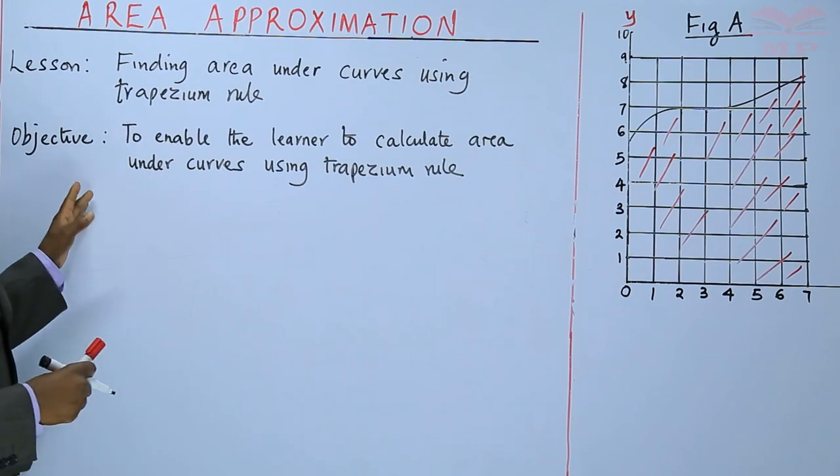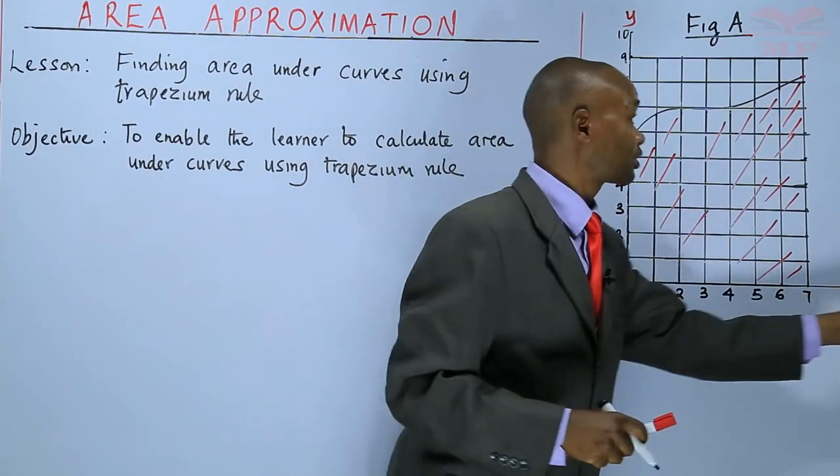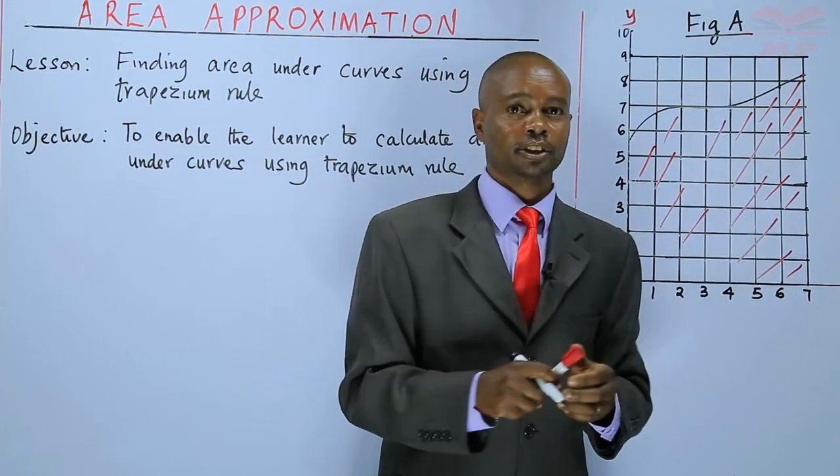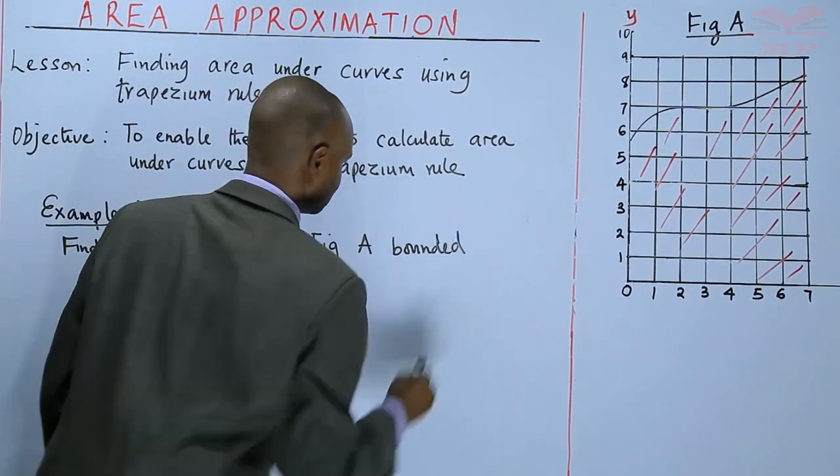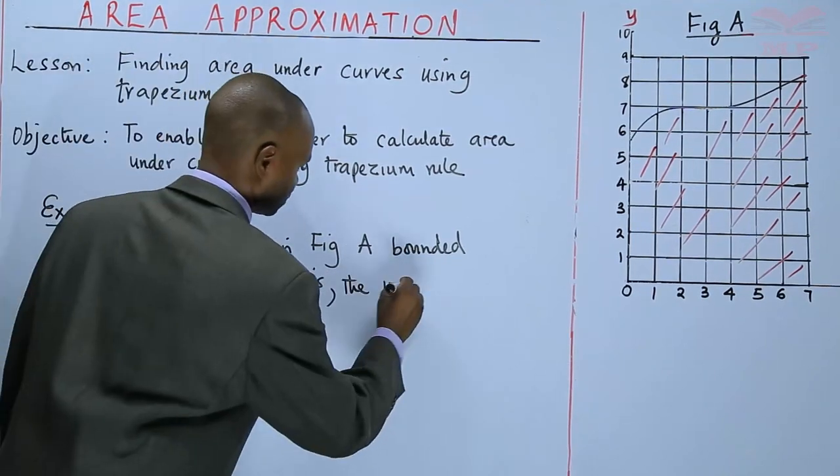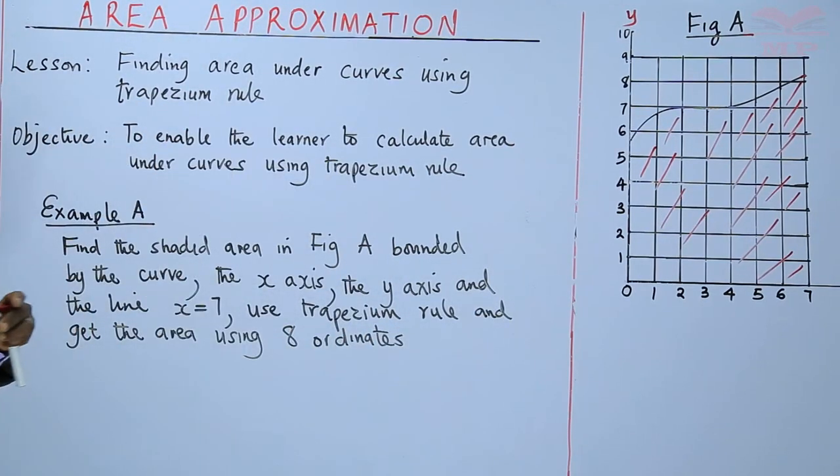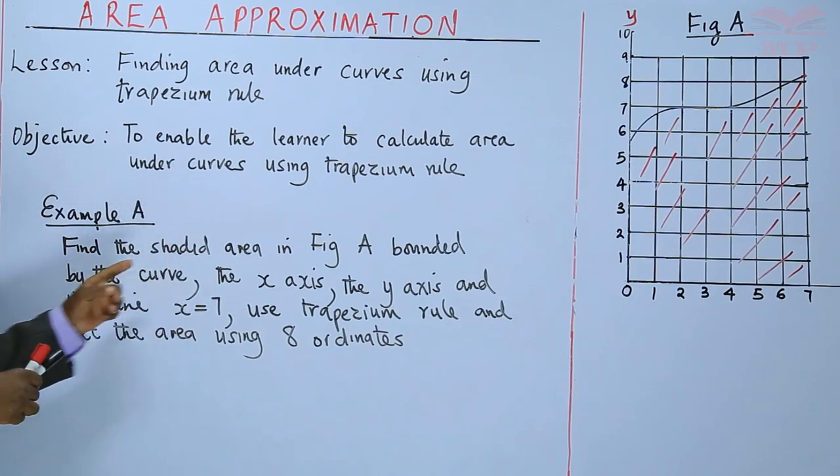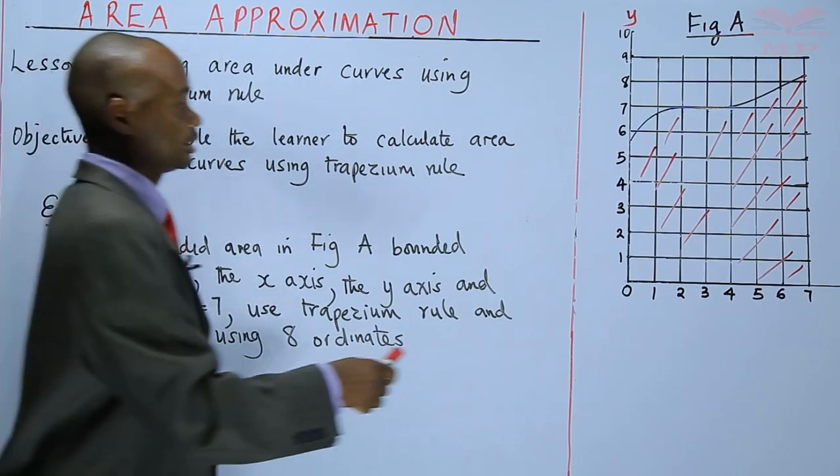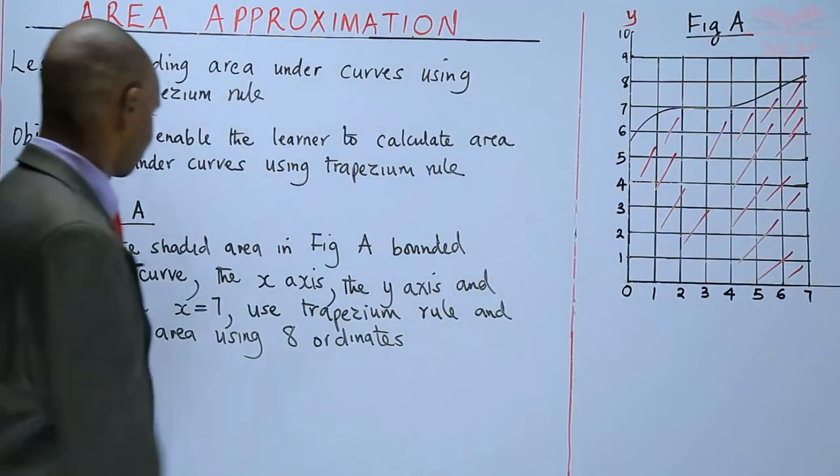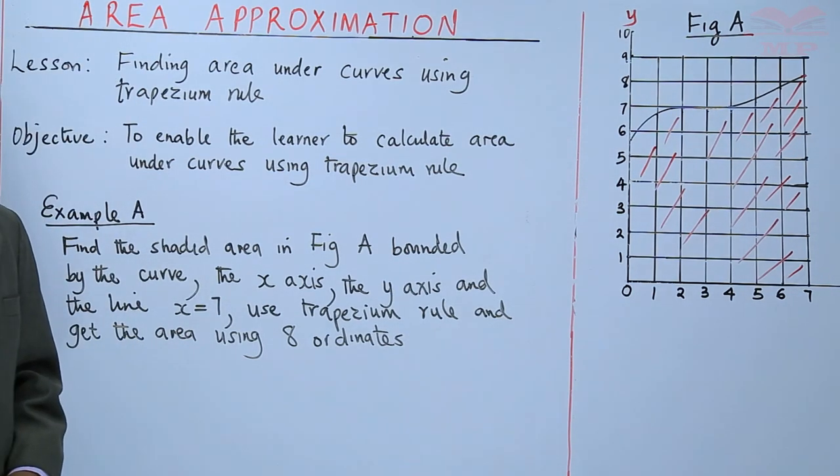We have a figure on the board. There is a curve, there is the x-axis, there is the y-axis, and there is the shaded region. The question goes: find the shaded area in figure A bounded by the curve, the x-axis, the y-axis, and the line x equals 7. Use trapezium rule and get the area using eight ordinates.